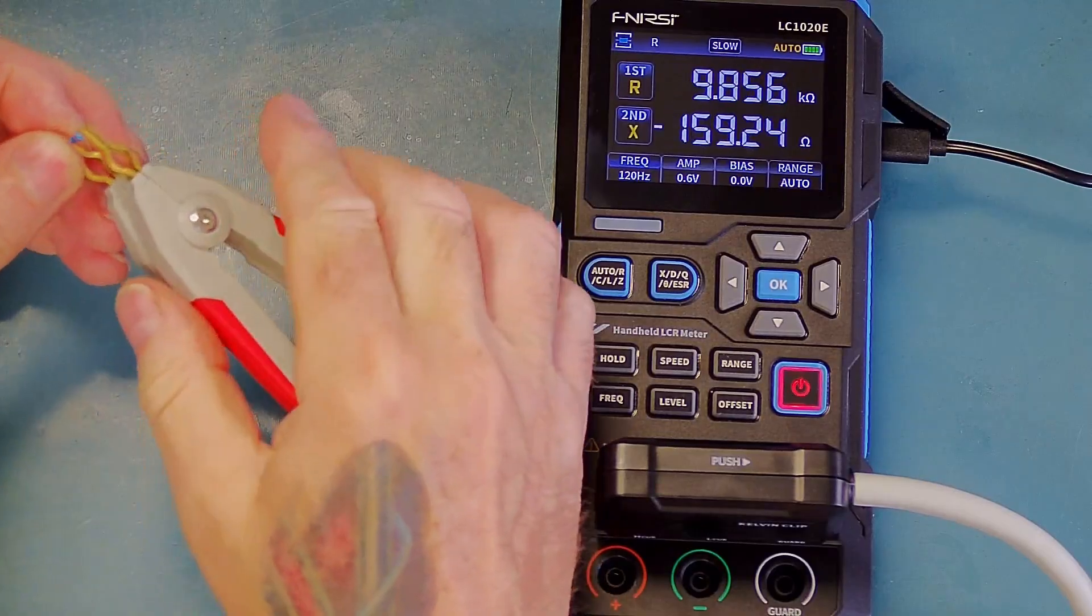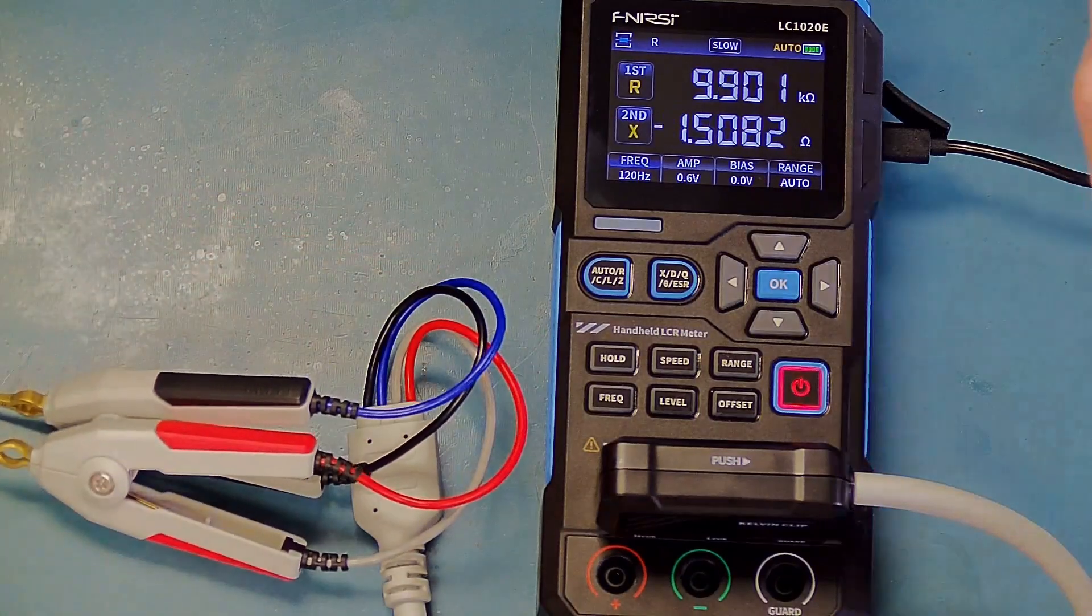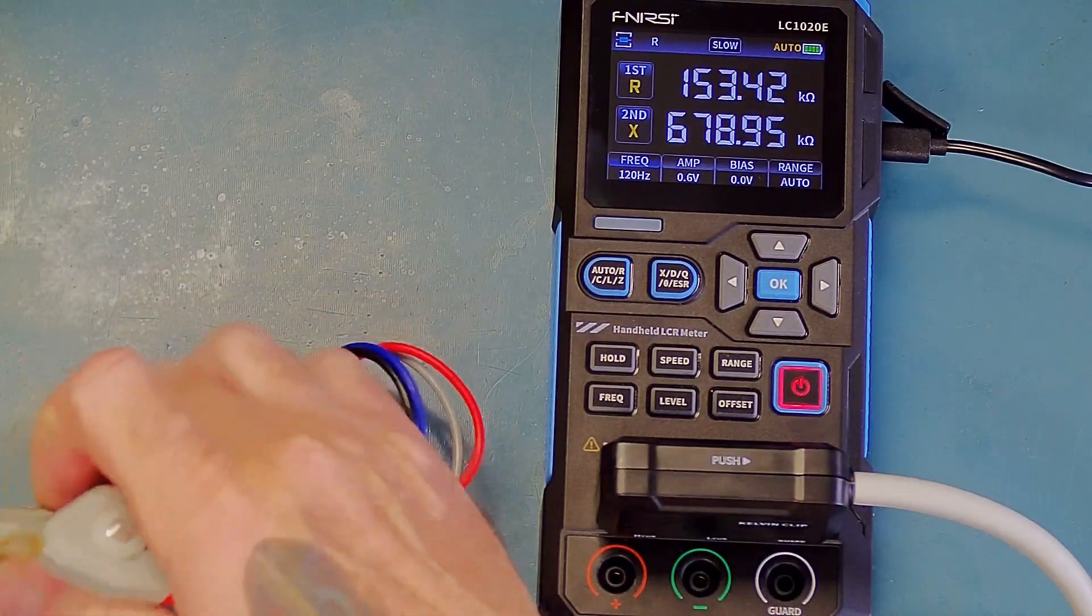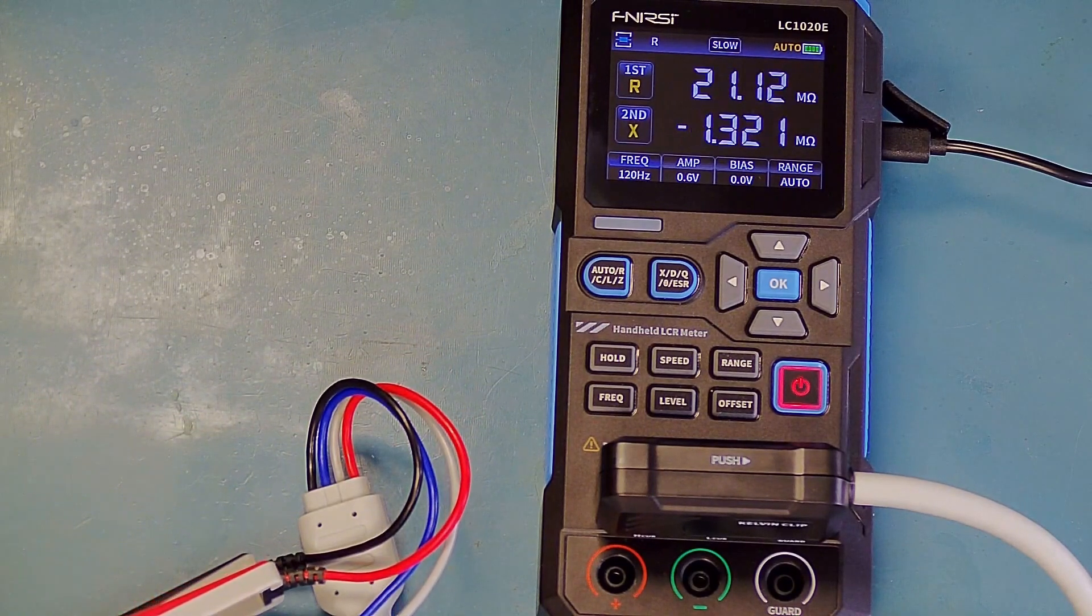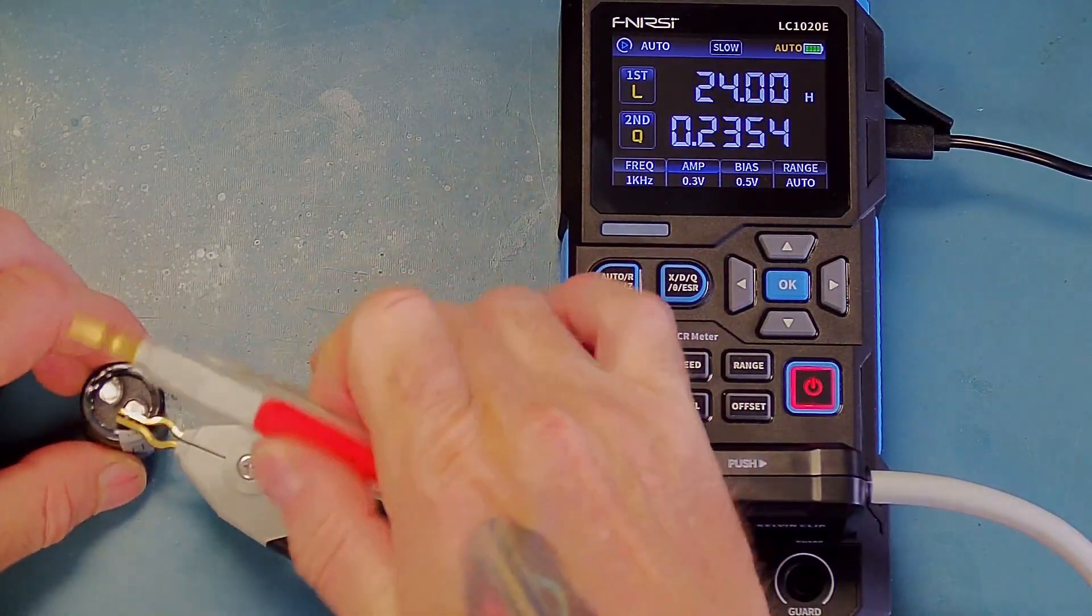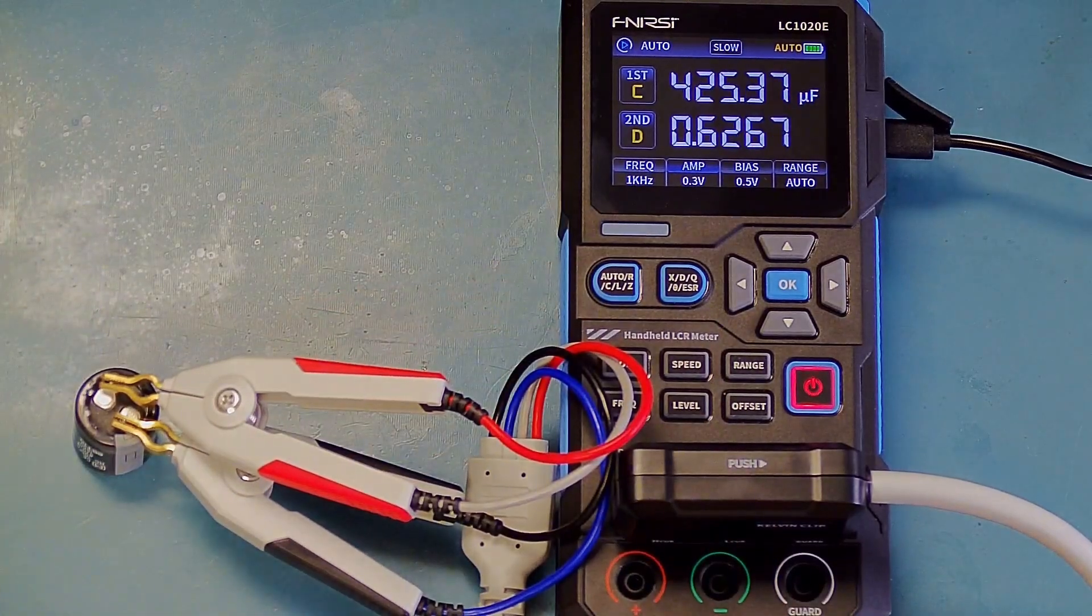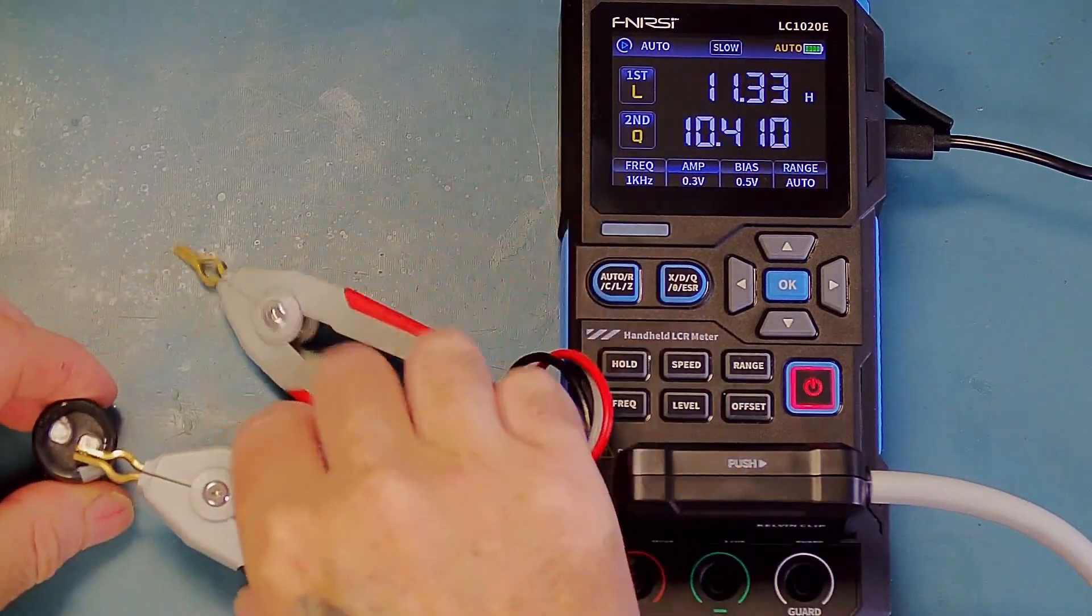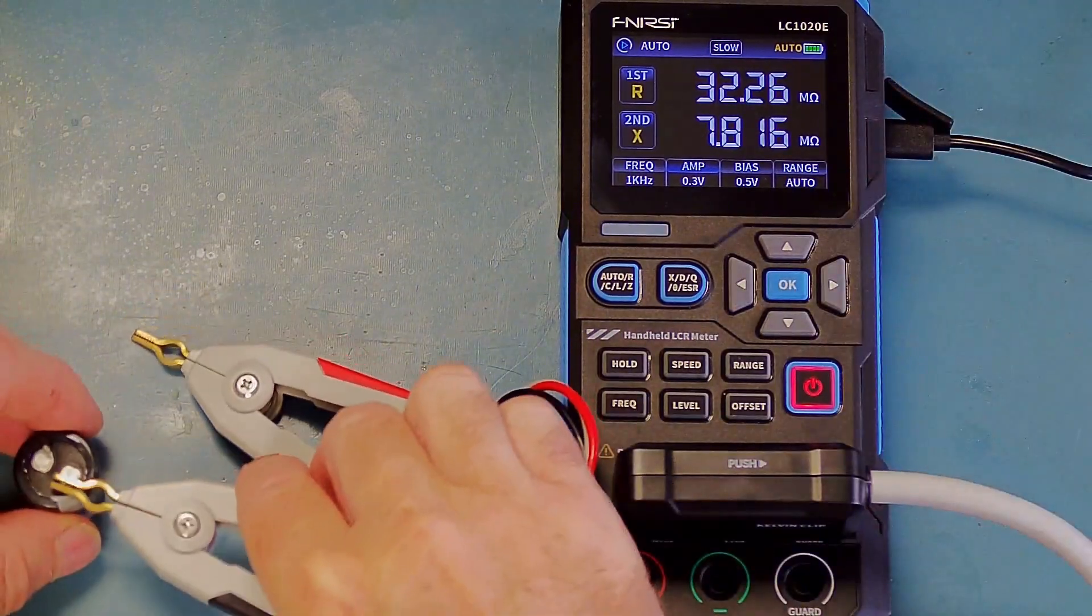So this should be a 10k resistor. Yes, it is. That's good. Let's just quickly grab a capacitor. Okay, I've got the test frequency on one kilohertz, the bias at 0.5 volts, and we'll connect this capacitor. It's a 470 microfarad, so it's measuring 425, which is fair enough. Okay, so that seems to work.